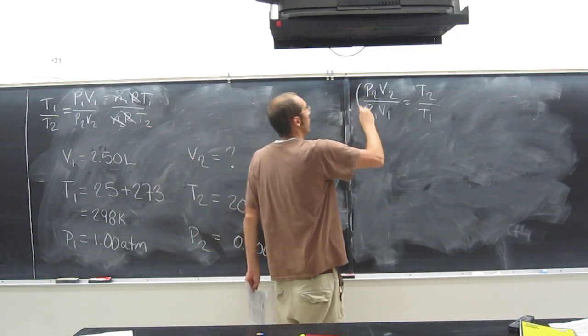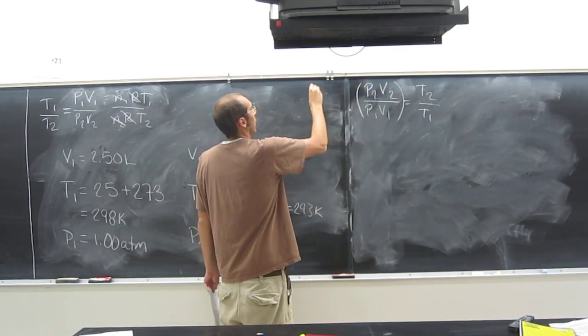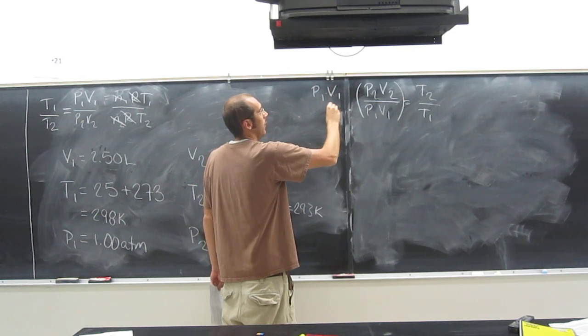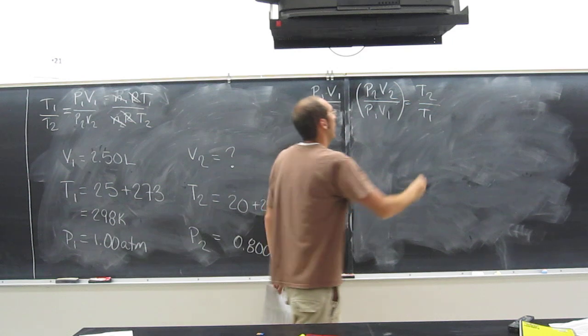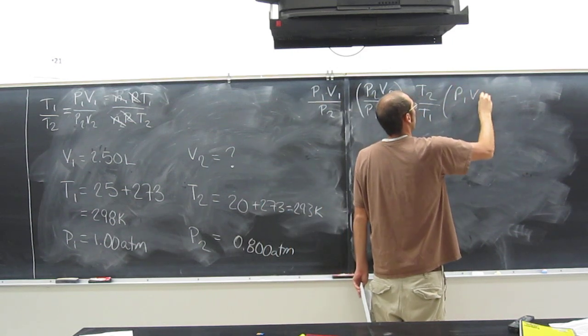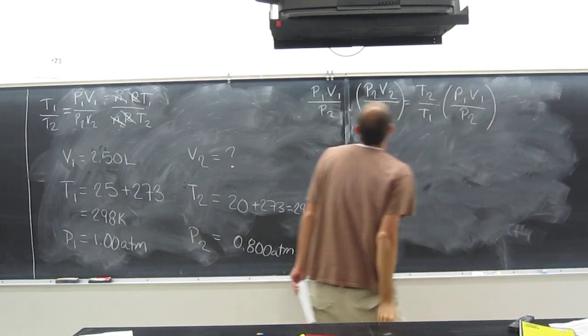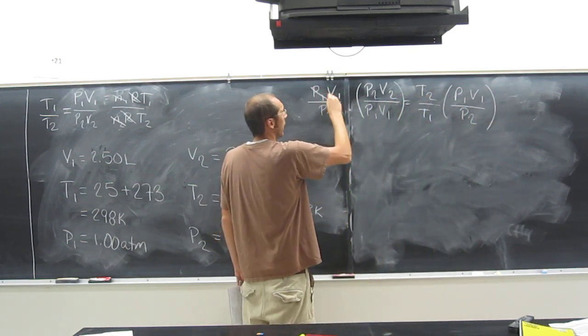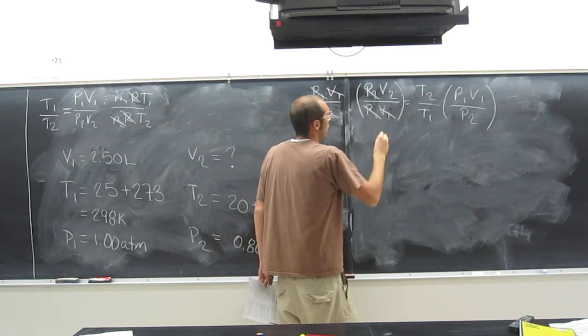We want to isolate the variable V2. Can we do it all in one shot? Yeah, how do we do it? Multiply P1, V1, and divide by P2. And then we've got to do that same thing to the other side too. So cancel, cancel, cancel.